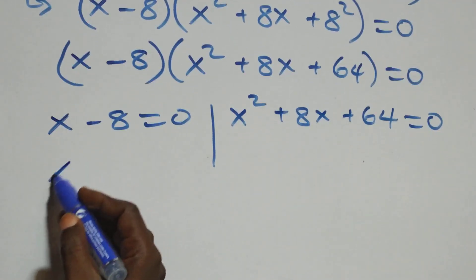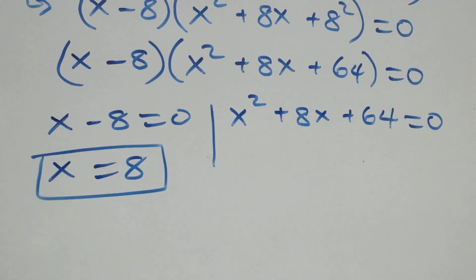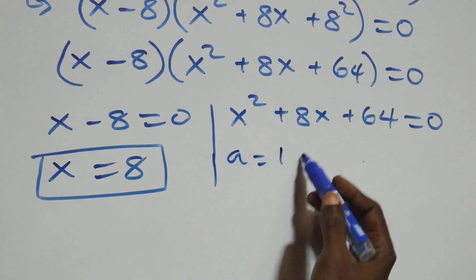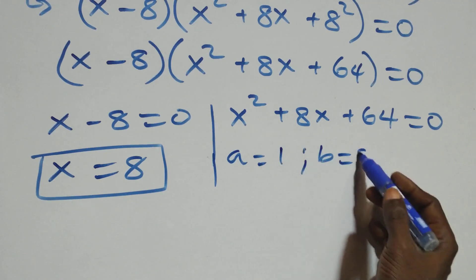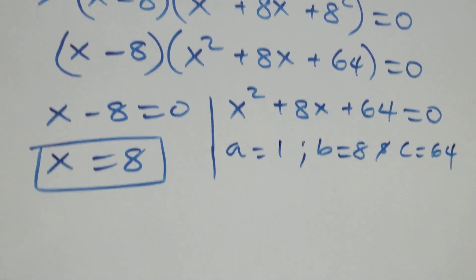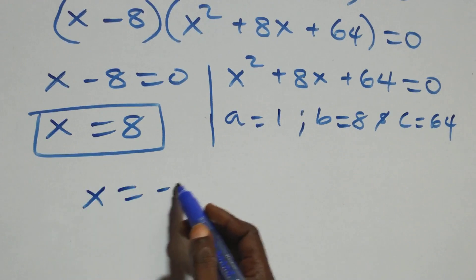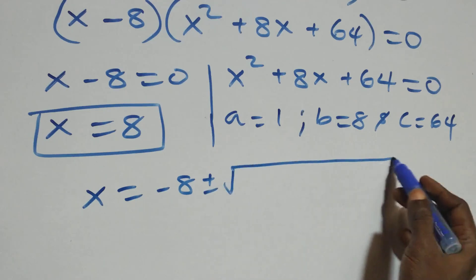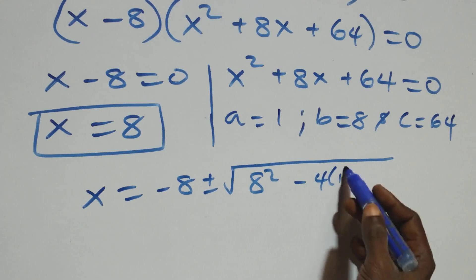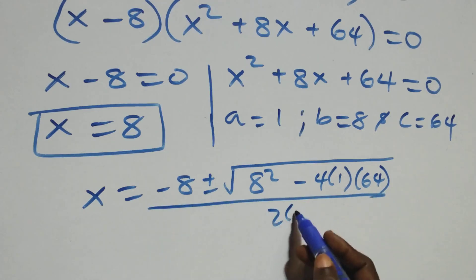Solving on this side: x equals to 8, which is a real solution. Then we have a quadratic equation where a equals to 1, b equals to 8, and c equals to 64. Applying the quadratic formula: x equals to minus 8 plus or minus square root of 8² minus 4 times 1 times 64, over 2 times 1.